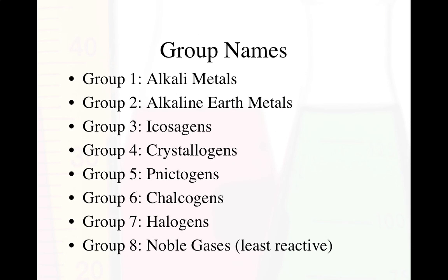Our group names: group 1 are the alkali metals, group 2 are the alkaline earth metals, group 3 are icosogens, group 4 crystallogens, group 5 nicogens, group 6 calcogens, group 7 are the halogens, and group 8 are the noble gases — the least reactive of them all. And there are the transition metals in between.